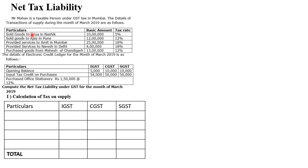First, sold goods to Priya in Nasik — that is a sale, so it comes under supply. Mr. Mohan is in Mumbai; he is selling goods in Nasik. Mumbai and Nasik both come under the same state, so the tax will be split into CGST and SGST. So 10 lakhs at 5% divided by 2 gives 25,000 each for CGST and SGST.